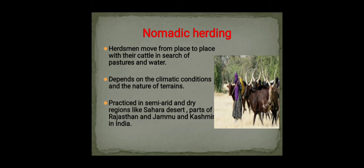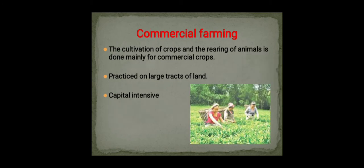Commercial farming is done in order to earn profit. Crops like tea, coffee, rubber, and sugarcane are grown on large tracts of land. It is a capital-intensive technique, though labors are required at harvest time — for example, for plucking tea leaves. Commercial farming uses higher doses of modern inputs to achieve higher productivity.